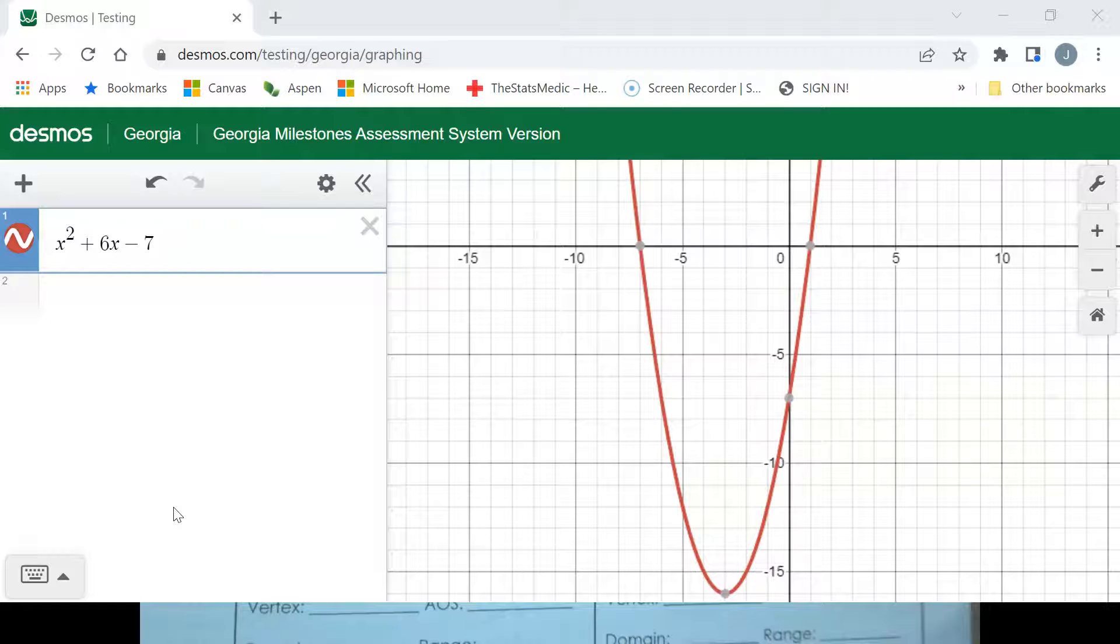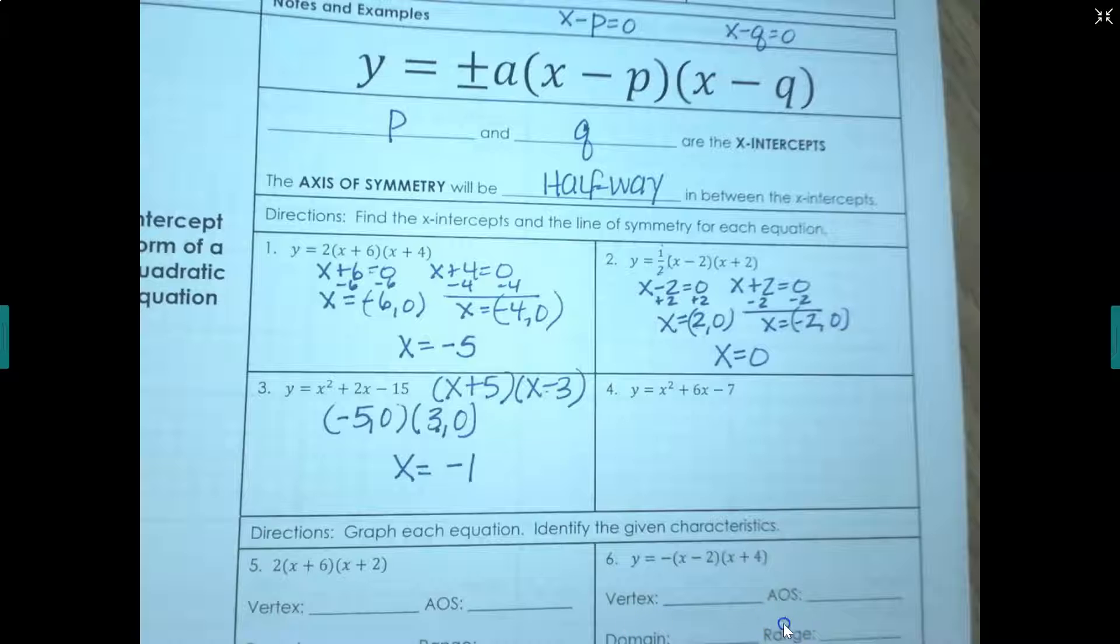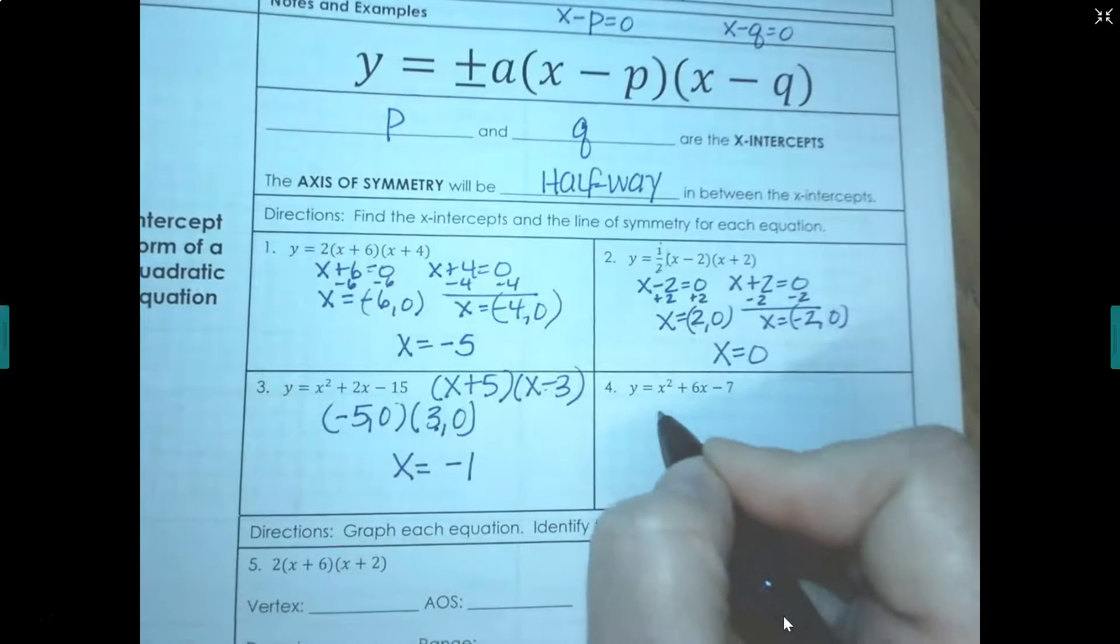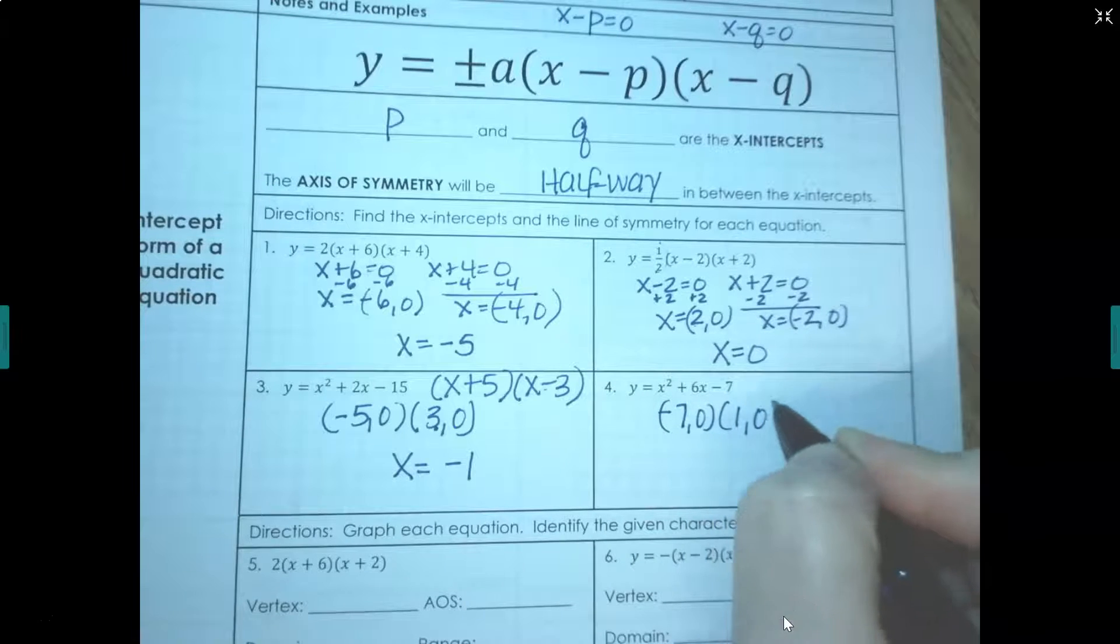All right, so here we go with x squared plus 6x minus 7, which is number 4. We have our x-intercepts at negative 7, 0 and 1, 0. So for my x-intercepts I'll say negative 7, 0 and 1, 0.